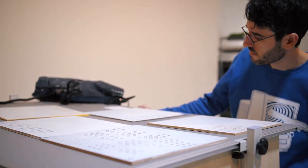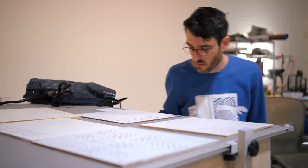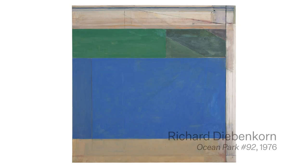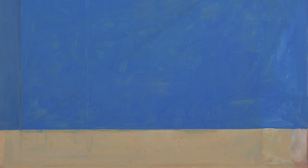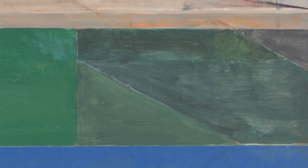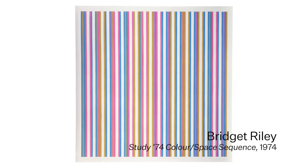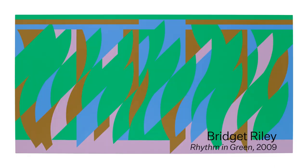My biggest influences artistically have really always been painters that find a way to work methodically and that really tend to focus on a systematic approach to their work — Richard Diebenkorn, particularly his Ocean Park series of paintings; Agnes Martin, Drawings on a Clear Day; Bridget Riley. There are all these painters that we don't normally associate with generative artwork, but there's really a strong generative element to how they create their work.